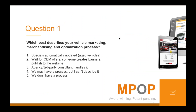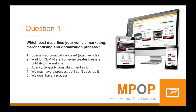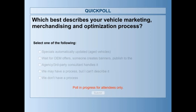Which describes your vehicle marketing, merchandising, and optimization process today? Is it: one, specials are automatically updated; two, you wait for OEM offers or someone else creates your banner ads; three, an agency or third-party handles updating your OEM, service, and new car specials; four, you have a process but can't describe it; or five — the worst — you don't have a process at all?